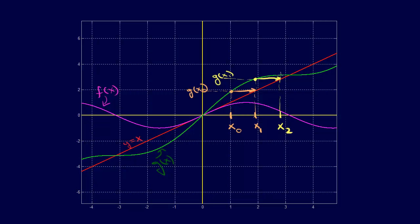Starting at x₂, we come up, evaluate to get g(x₂), then come over to the red line to get x₃. We can see we are pretty much there — we've found the root. Evaluating g(x₃) we are basically there. This is fixed point iteration: we go from x₀ up and over, then back up and over, converging on the root. Depending on how the graph looks, we may switch sides of the y = x line, but in either case this is how we converge on the root.